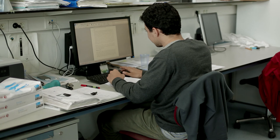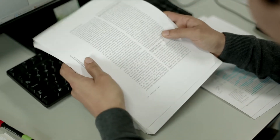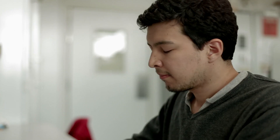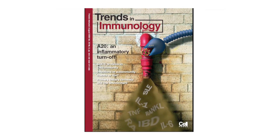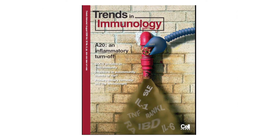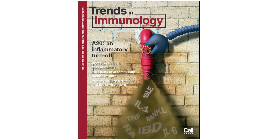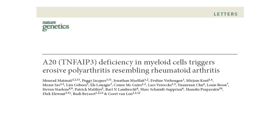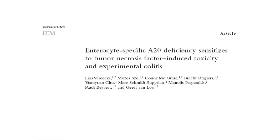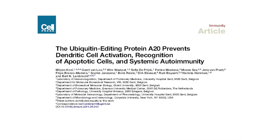A cell employs many different mechanisms to keep NF-kappa-B and inflammation in check, and one of these mechanisms is the activation of a protein called A20. A20 can be considered as an inflammatory turn-off, because it turns off inflammatory processes once these have done their job. Based on our findings and the scientific literature, we now know that A20 is very important in controlling inflammatory processes, and defects in proper A20 function may give rise to disease development.